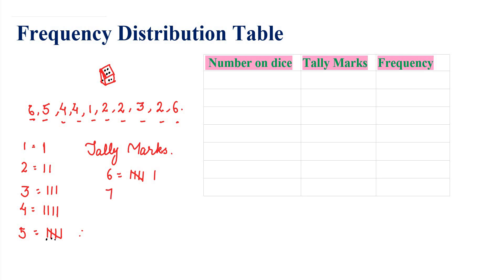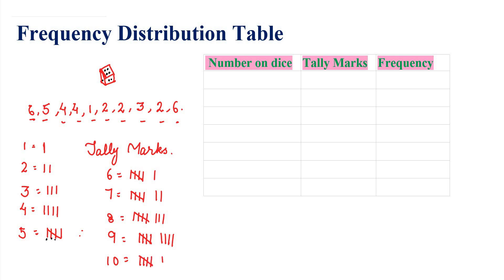Similarly, seven would be drawn as five plus two, eight as five plus three, nine as five plus four, and ten as two groups of five tally marks. So you can see how we draw tally marks: one through ten are represented using vertical lines grouped in sets of five with a slanting line.